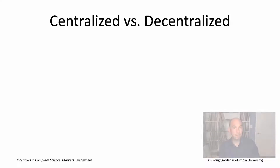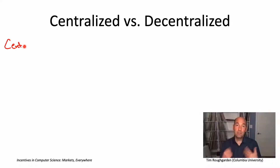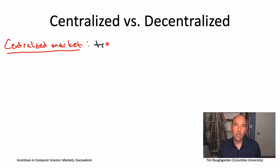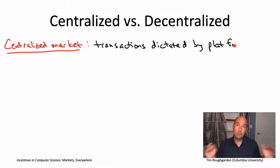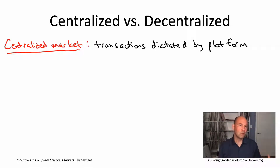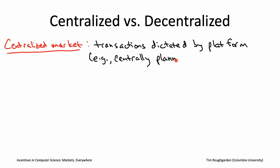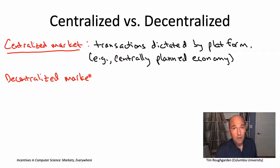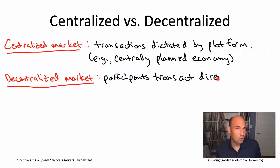So what do I mean by that? By a centralized market, I mean one in which the transactions are dictated to the participants by either a third party or by the owner of that market itself. In a decentralized market, on the other hand, the participants are free to transact directly.